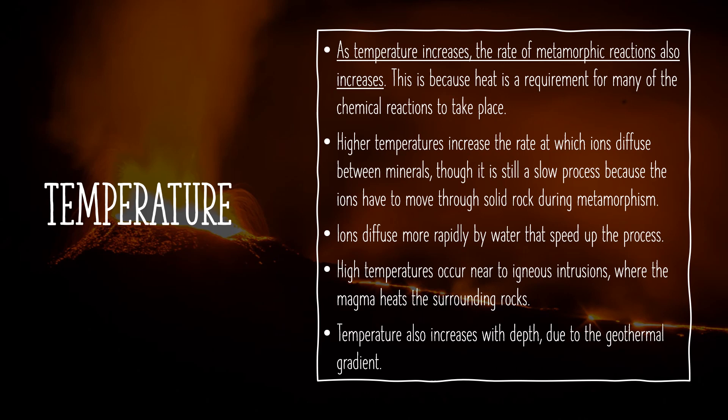In metamorphism, as temperature increases, the rate of metamorphic reactions also increases. This is because heat is a requirement for many of the chemical reactions to take place. Higher temperatures increase the rate at which ions diffuse between minerals, though it is still a slow process because the ions have to move through solid rock. The ions diffuse more rapidly with water, which speeds up the process.